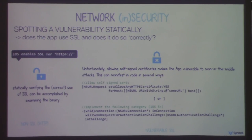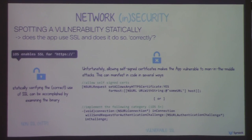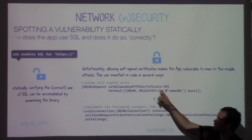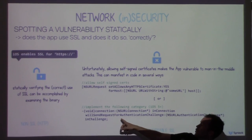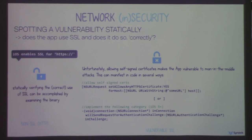The first thing I always check: does the app use SSL, and does it do it correctly? Apple makes SSL easy — just put HTTPS at the start of the URL. But developers can and sometimes do override this to allow self-signed certificates, often for testing but it makes it into production. If you allow self-signed certificates, you're vulnerable to man-in-the-middle attacks. To spot this bug, look for calls to setAllowsAnyHTTPSCertificate, or an implementation of willSendRequestForAuthenticationChallenge. In the disassembly example, you can see it's invoking setAllowsAnyHTTPSCertificate, meaning the app accepts self-signed certificates and is vulnerable to MITM.